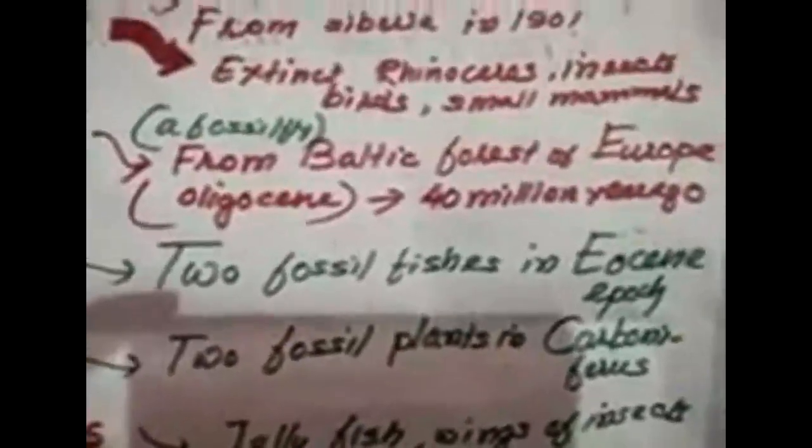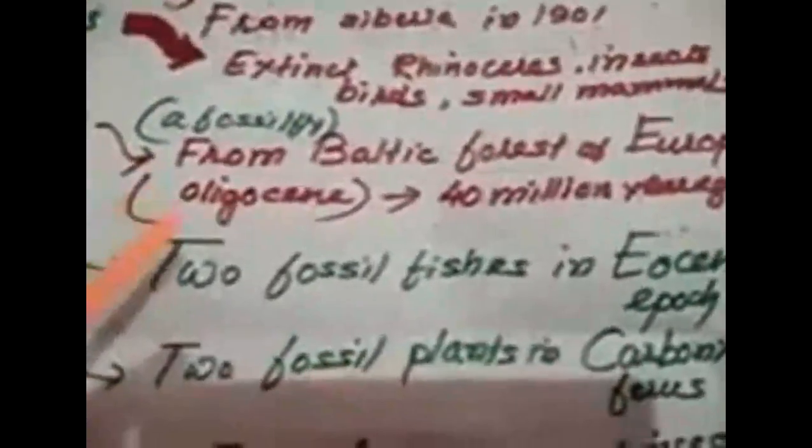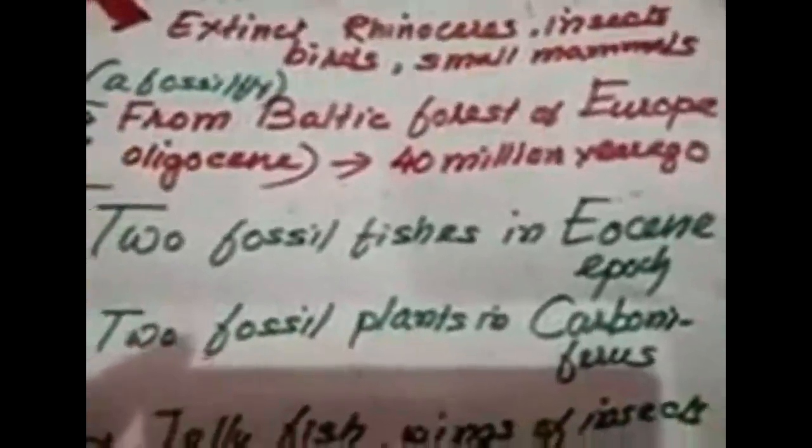Resins and amber: terrestrial insects and tree-dwellers can be preserved in tree resin secretions. These secretions got hardened and converted into amber. For example, about 40 million years ago in the Baltic forest during the Oligocene period, fossil flies were preserved in amber. From these amber fossils we can even get color information and histological details of the preserved fly.